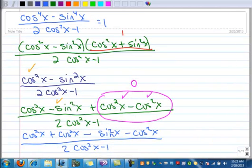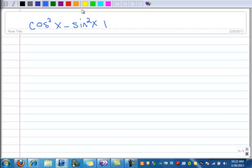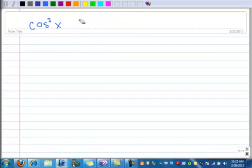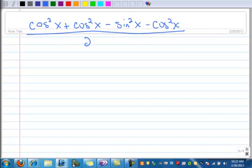So I'm just going to recopy what I had before: cosine squared x minus sine squared x. And then we had a plus, I had already rearranged them now, right? So the two cosines there together. The cosine squared plus the cosine squared, then we had the minus sine squared minus cosine squared. All over 2 cosine squared x minus 1.